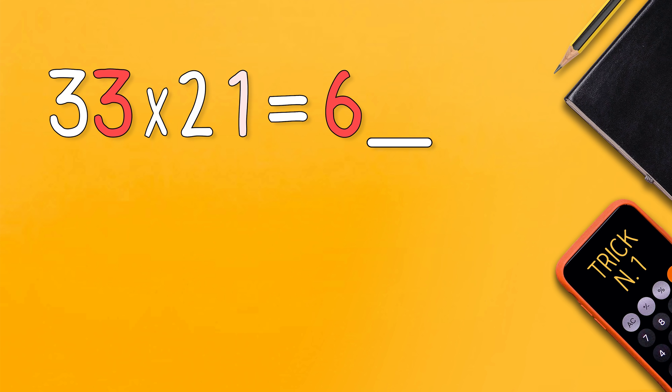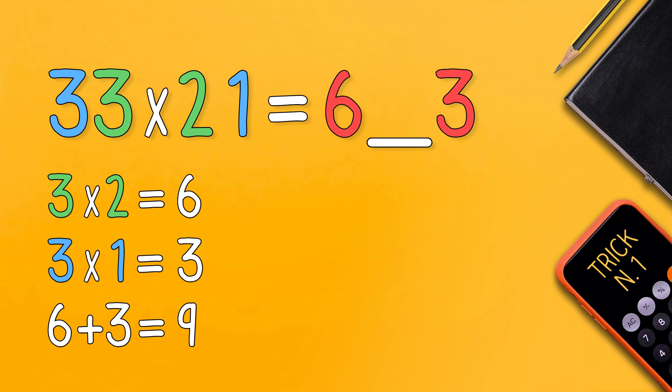Now to find the one number you need to write in the blank space you first need to multiply the numbers in the middle and then the external digits. We sum the two results and then like magic we have the middle number of the answer.